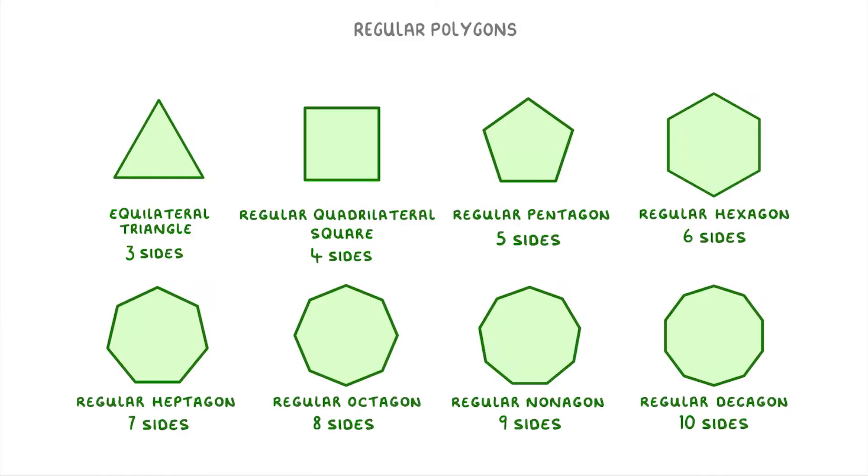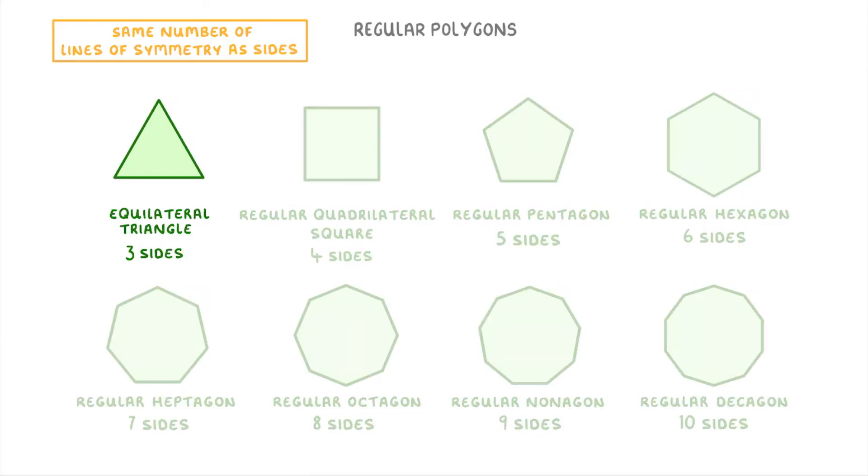Now one of the nice things about regular polygons is that they all have the same number of lines of symmetry as they have sides. For example, a regular triangle which has three sides will also have three lines of symmetry, while a regular hexagon which has six sides will have six lines of symmetry.